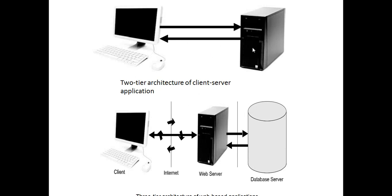Let us take the example of client-server architecture. Business logic may reside on a server machine, and the user interface may reside on a client machine. The database may reside on either the client machine or the server. Business logic can produce better or advanced results. This architecture is known as a two-tier architecture.